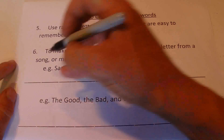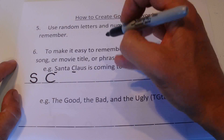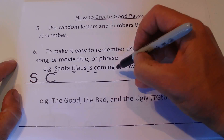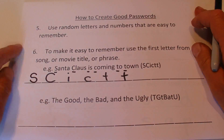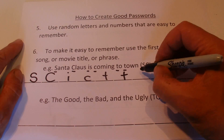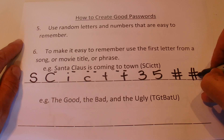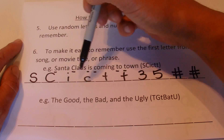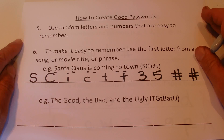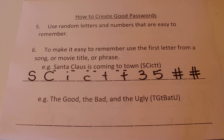Say you remember the song 'Santa Claus is Coming to Town.' You might start with a capital S for Santa and a capital C for Claus, then I-C-T-T — that's six letters. You might add your favorite numbers, say 3 and 5, and end with two hashtags. So your password is SC-I-C-T-T-35-## — a totally random set of letters, numbers, and symbols, but suddenly easy to remember.